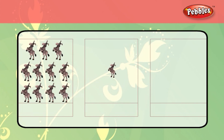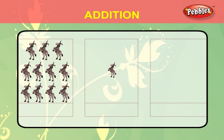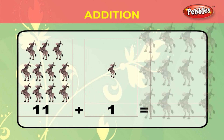There are 1, 2, 3, 4, 5, 6, 7, 8, 9, 10, 11 donkeys in the first box and 1 donkey in the second box. Now add both the numbers. 11 plus 1 is equal to 12.